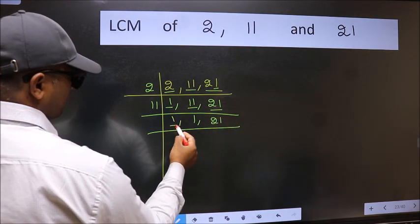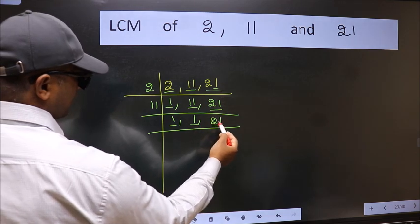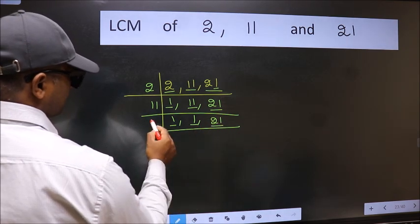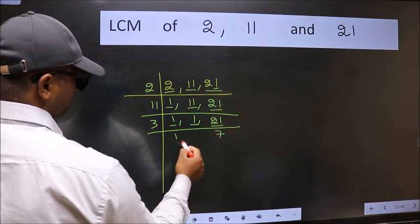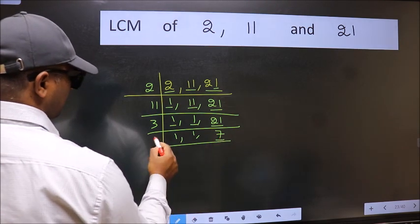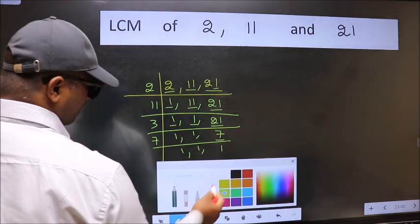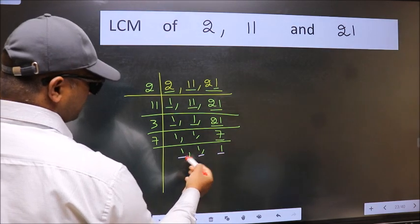Now we got 1 here and here so focus on the next number 21. 21 is 3 times 7. Now here we have 7. 7 is a prime number so 7 goes into 7. So we got 1 in all the 3 places.